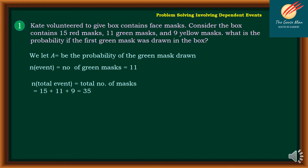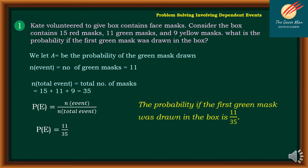The total number of masks is 15 red + 11 green + 9 yellow = 35 masks in all. The probability of that event is the number of favorable events divided by the total number of events, which is 11 out of 35. Therefore, the probability that the first green mask was drawn from the box is 11 over 35.